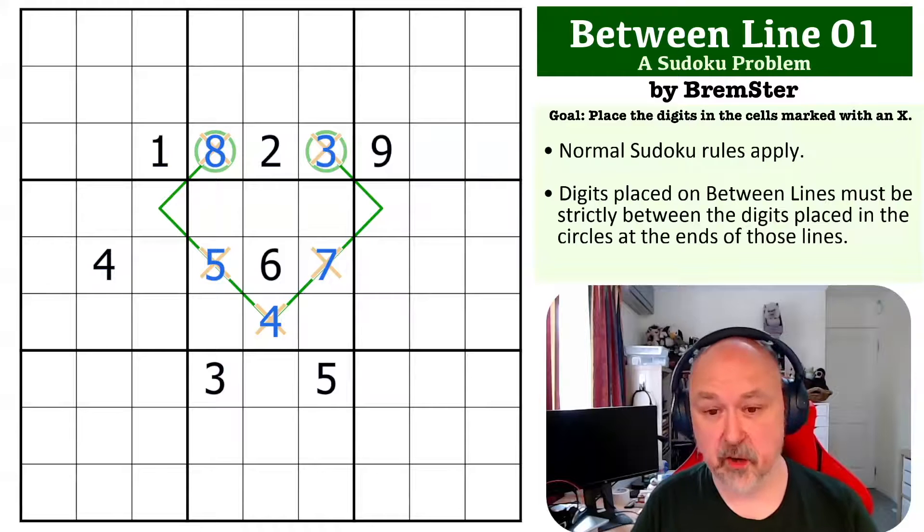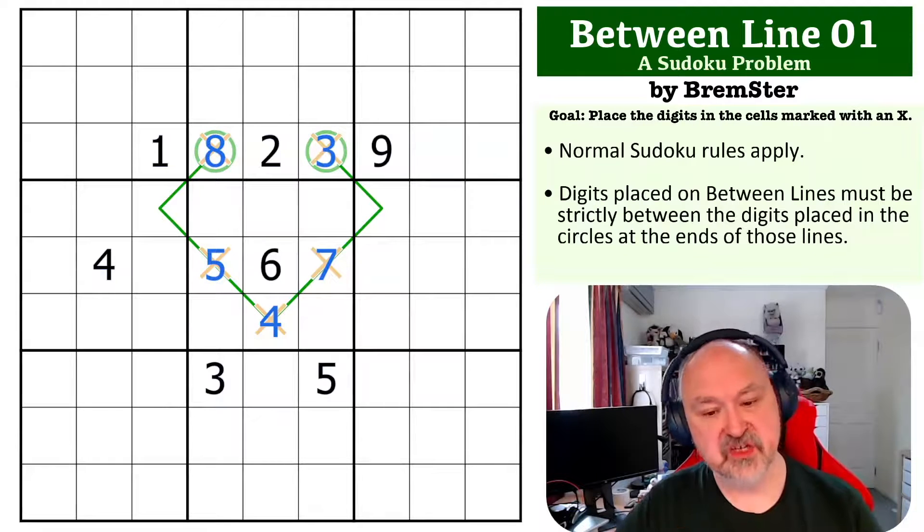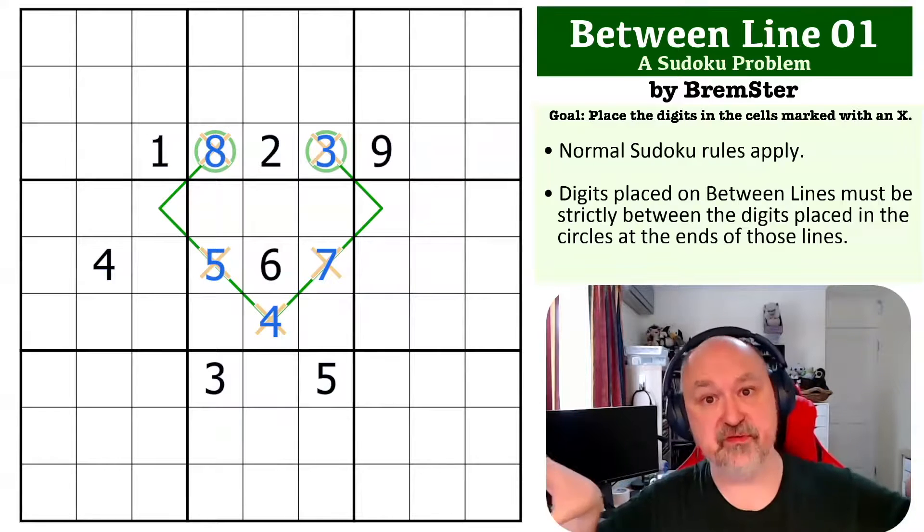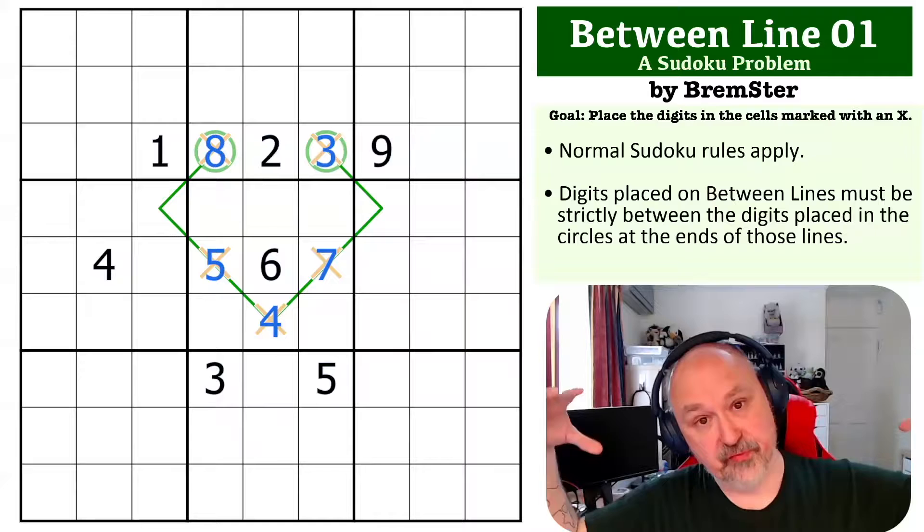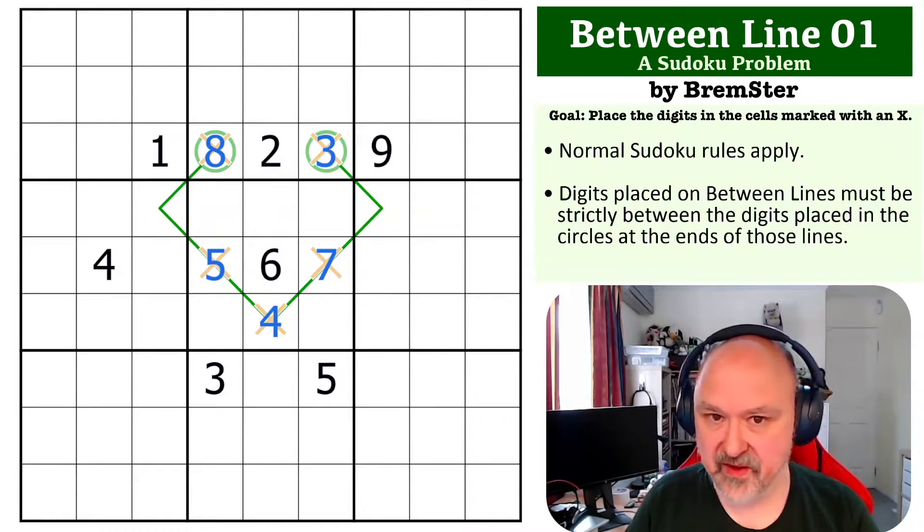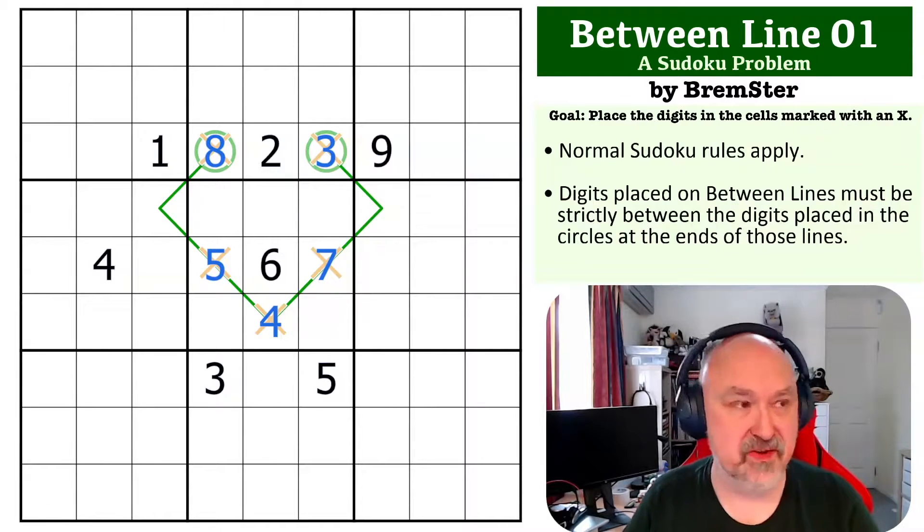Not particularly complex, but you need to understand how the digits that are placed on the line force the two in the circles out from the line and the digits in the circles force the digits on the line in. Quite an interesting little problem. I do like the way between lines work, though I haven't played with them very much in the last nine months.